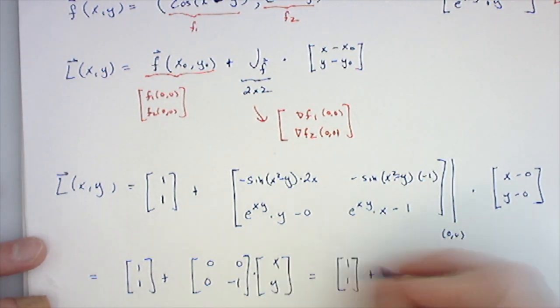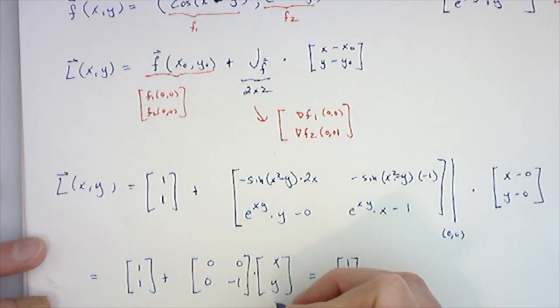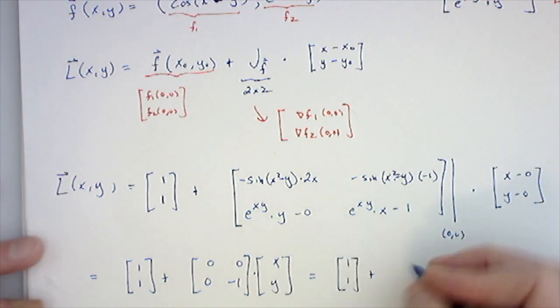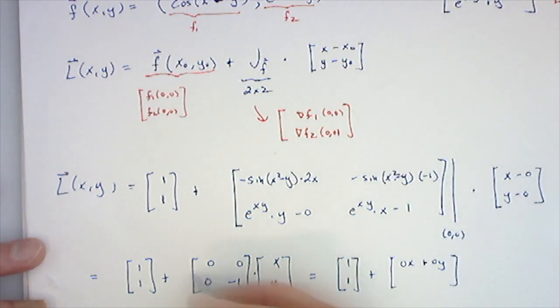When I multiply this matrix by this vector, I get 0x + 0y in the first entry, and 0x plus -1 times y.